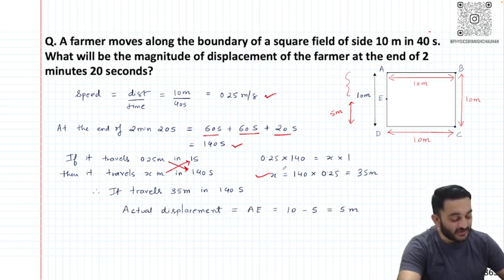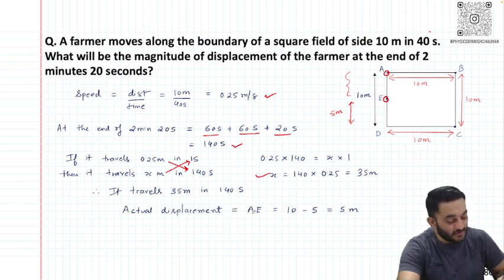The actual displacement is always between the final and initial point. If I have to calculate the displacement, the length of AE is my displacement. I know that AD is 10 meters and ED is 5 meters.